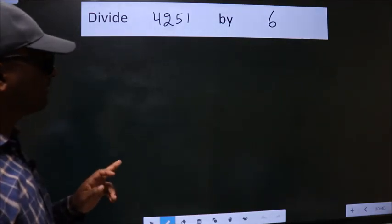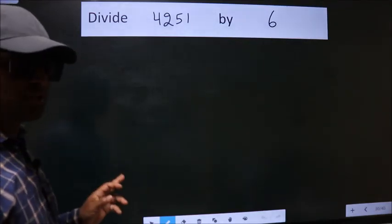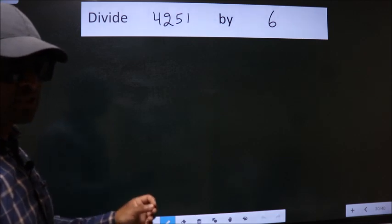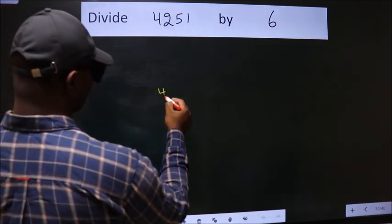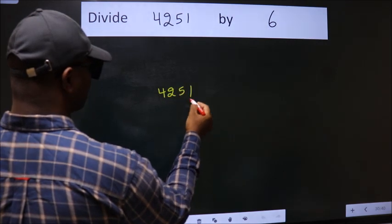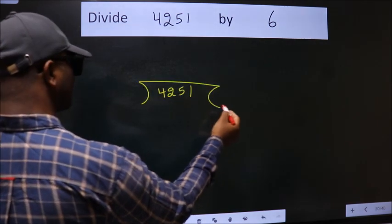Divide 4251 by 6. To do this division, we should frame it in this way. 4251 here, 6 here.